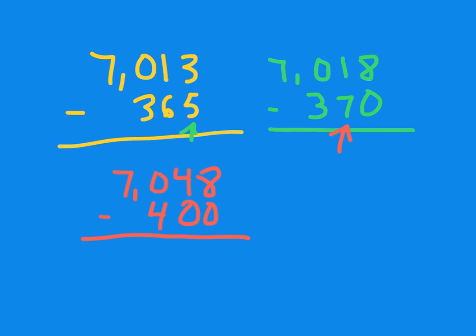8 minus 0 is 8, 4 minus 0 is 4. I can't subtract 4 from 0, so again, showing my alternative borrowing method, I need to make that a 10. And to the left of my 4, I'm going to put a 1.